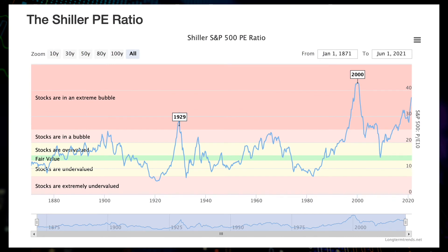The benefit of looking at the Shiller P/E ratio for baskets and indices is that it smooths out the noise of short-term earnings, making the real overvalued periods easier to spot. We can see 1929 and 2000 — the two P/E spikes preceding the crash in 1929 and the burst of the dot-com bubble in 2000. From historical distribution, we see that when the Shiller P/E ratio is above 25, the stock market is likely living in an extreme bubble.